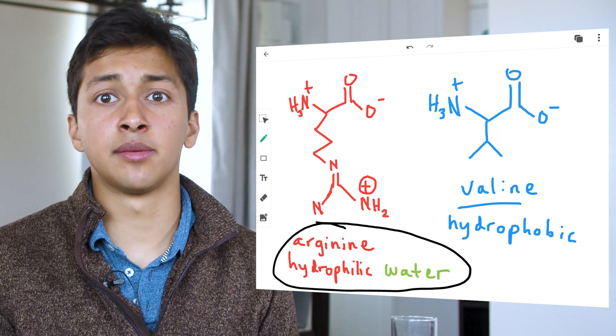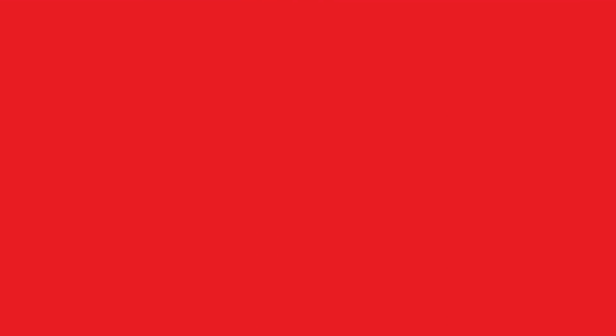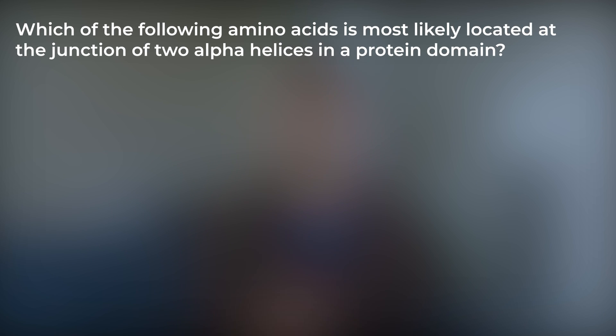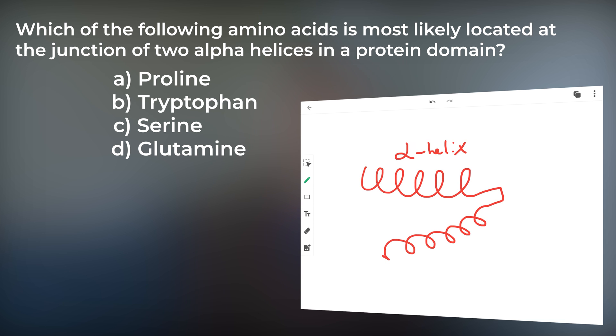Let's go through an example of an MCAT style Biology and Biochemistry question. Which of the following amino acids is most likely located at the junction of two alpha helices in a protein domain? There are two amino acids that are known to introduce flexibility and kinks into peptide chains. These are proline and glycine. We are likely to see an amino acid that changes the direction of the chain by introducing flexibility at the junction of two alpha helices.